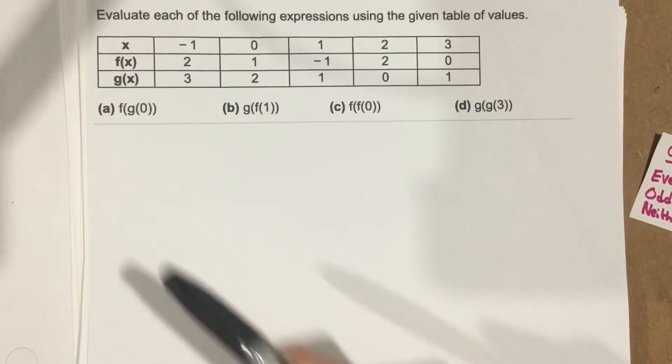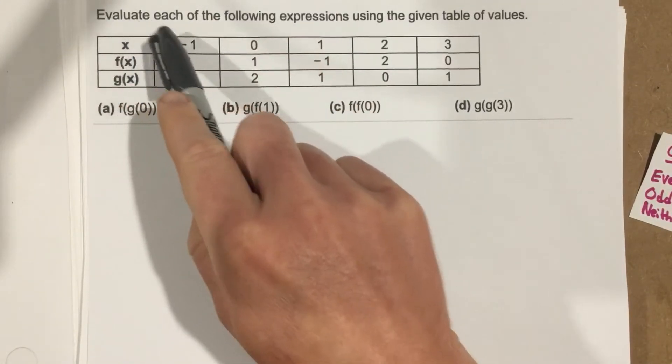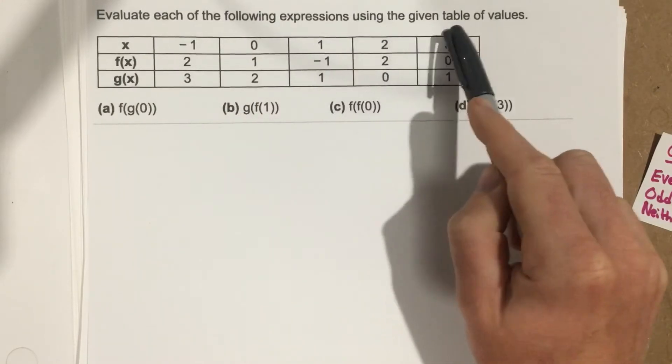This is problem number 5 from section 1.2. In this problem it says evaluate each of the following expressions using the given table of values.